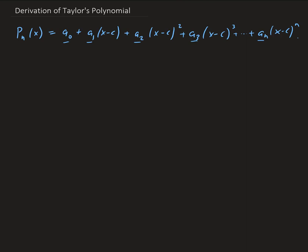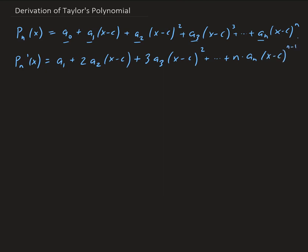First, the first derivative of P: the derivative of a0 is 0, since it's just a constant. The next term gives us a1, then plus 2 times a2 times (x minus c), plus 3 times a3 times (x minus c) squared, and so on, up to n times a_n times (x minus c) to the n minus 1. We're basically applying the power rule for each term.